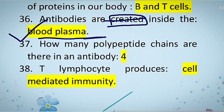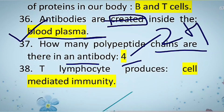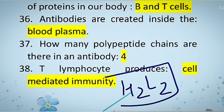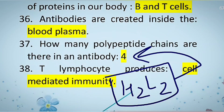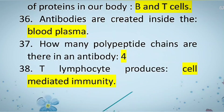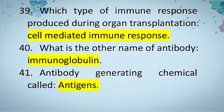The next question: how many polypeptide chains are there in one antibody? There are four chains — two heavy (H) and two light (L) chains — giving the formula H2L2. This is a protein structure, part of the army of proteins we discussed.